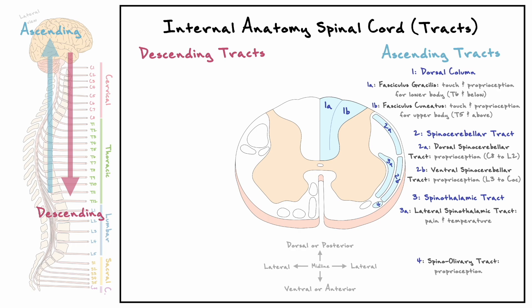In the ventral column, there is one ascending tract: the ventral or anterior division of the spinothalamic tract, which carries sensory information about crude touch and pressure.